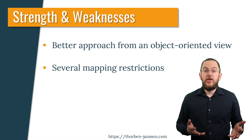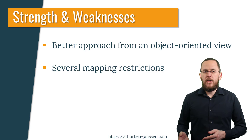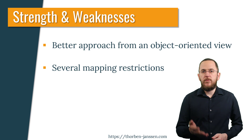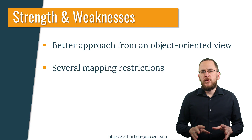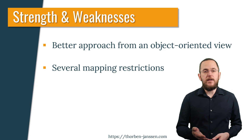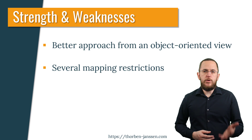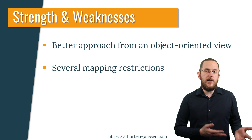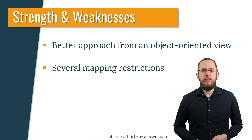The embeddable mapping applies the concept of composition and is the better approach from an object-oriented design perspective. However, it introduces several mapping restrictions. You can't use an embeddable to model only one primary key alongside other attributes, and you can't use the @Version or @UpdateTimestamp annotations on attributes of an embedded class — Hibernate supports both of them only for entity classes. If you don't need these specific annotations and can provide all required logic in a lifecycle callback method, an embeddable is a great way to model shared technical attributes.